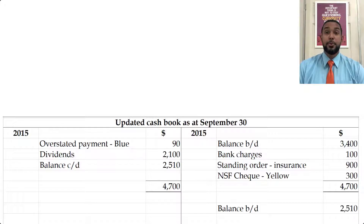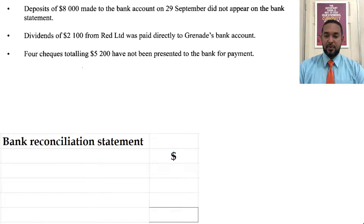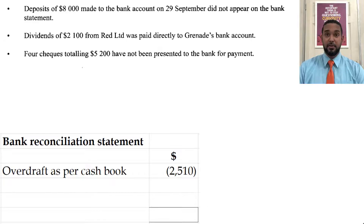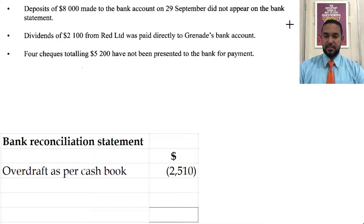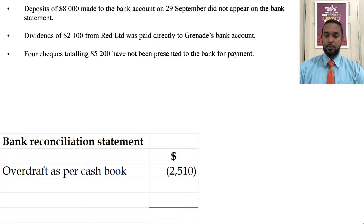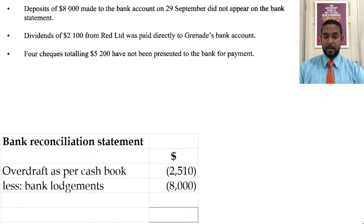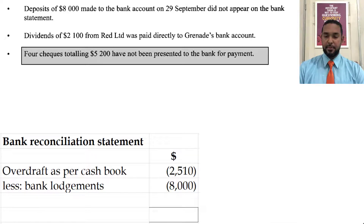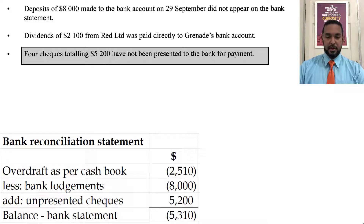For the bank reconciliation statement, we were not given the bank statement balance, so we have no choice but to start with the updated cash book balance of 2,510. There are only two items that go here: the deposits of 8,000 made to the bank account — those are bank lodgements, so we subtract them. Then the unpresented checks of 5,200 — we add those back. That gives us an overdraft of 5,310.